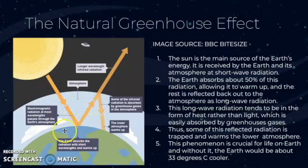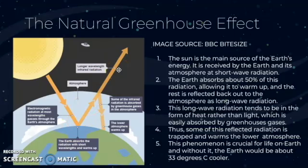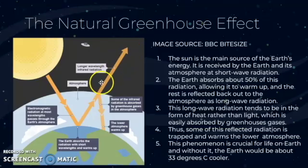When radiation reaches the Earth, the Earth absorbs about 50% of it, which allows the Earth to warm up. The rest of it is reflected back out to the atmosphere as longwave radiation. As mentioned, longwave radiation comes from cooler bodies, so the Earth. This longwave radiation tends to be in the form of heat rather than light, and heat is actually more easily absorbed by the greenhouse gases. So in the troposphere, where the greenhouse effect takes place, some of these natural greenhouse gases actually trap the heat and that warms the lower atmosphere.